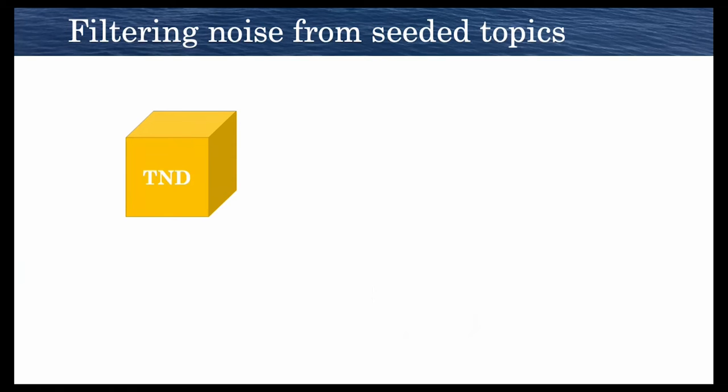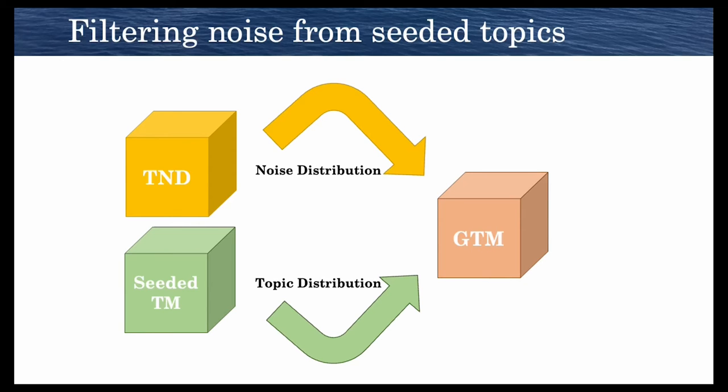Once we've generated our topics, we want to filter noise from the seeded topics and the unsupervised topics. Because social media data and short text in general are notoriously noisy, we want to get rid of as much of that as possible so that our users can better interpret and evaluate these topics. So we take topic noise discriminator, which is a topic noise model designed to get a good representation of a noise distribution, and we put it in an ensemble with the seeded topic model that we just described. We take the noise distribution from TND and the topic distribution from the seeded topic model, and we get GTM, the guided topic noise model.